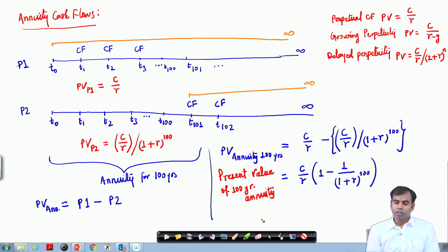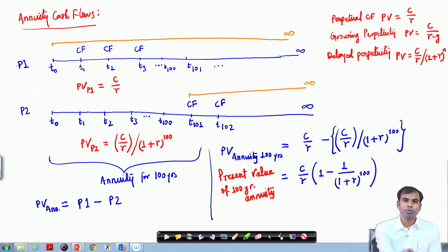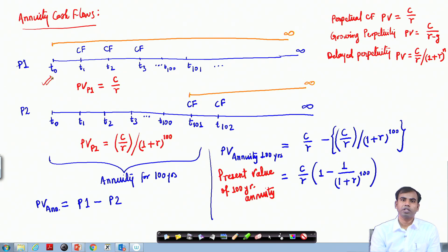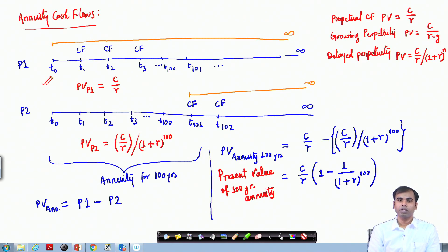From the timeline perspective, the present value of the first 100 years of cash flows is calculated by taking each cash flow generated at T1, T2, T3 in Project 1 and discounting each back to the present time T0, which is today. This is how we derive the formula for the present value of a 100-year annuity.